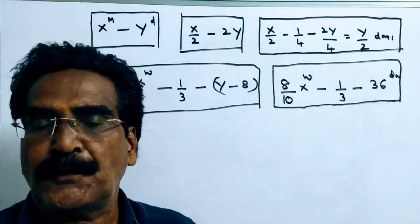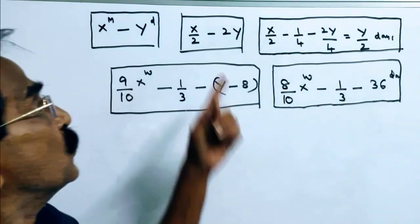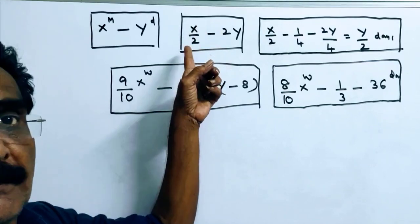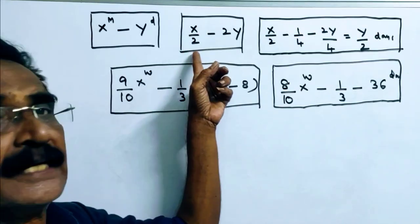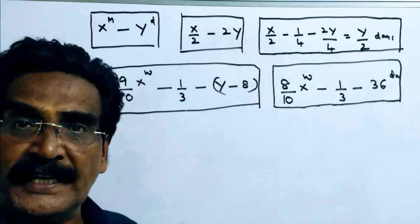0.5 X men means 1 by 2. So then X by 2 men can complete the same work in 2Y days.